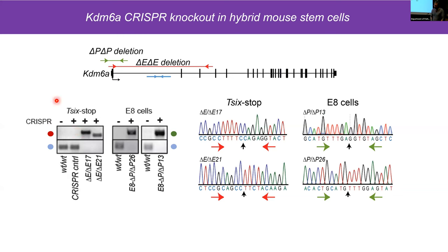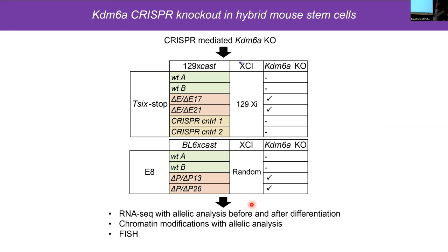The gels below confirm the deletion status in wild-type cells, CRISPR controls, and homozygous deleted clones. On the right are chromatograms illustrating the non-homologous end joining after CRISPR. For the T6-STOP model, we used two wild-type clones, two homozygous knockout clones, and two CRISPR control clones — cells that went through the CRISPR process but did not get a deletion, to control for effects of cloning and selection. The 129 X chromosome in this model is always inactivated. For the E8 cells, we used two wild-types compared to two independent CRISPR knockout lines, and these cells have random X inactivation.